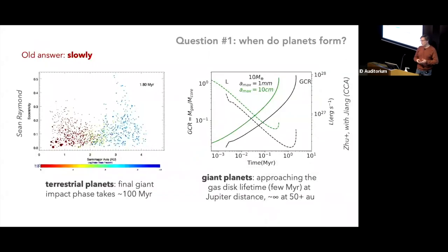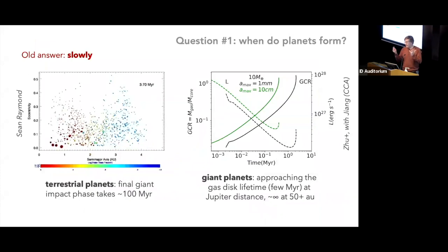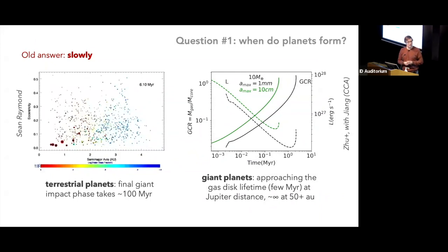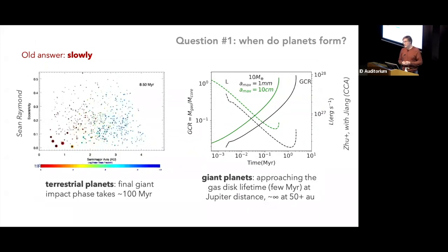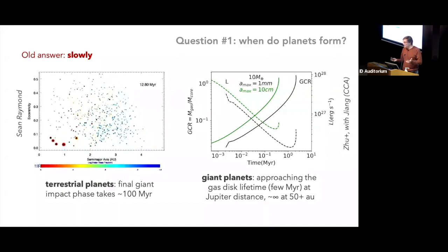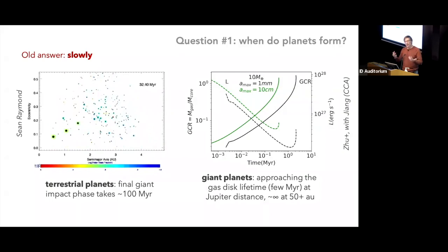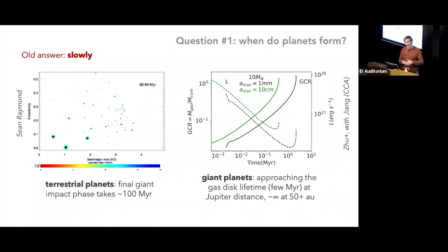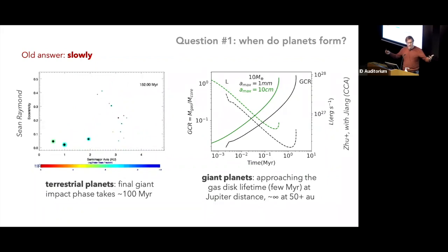Let me turn to things we don't know — three big open questions. The first is: when do planets form, how quickly does this process play out? The old answer — 'old' being maybe only 10 years ago — was that this is a fairly slow process. The simulation shown here is of terrestrial planet formation: distance from the star on the x-axis, eccentricity on the y-axis, a purely gravitational simulation of small bodies being scattered until they collide and grow. Stopped at 200 million years, it shows three planets roughly where Venus, Earth, and Mars are with low eccentricity, plus a few objects further out like the asteroid belt.